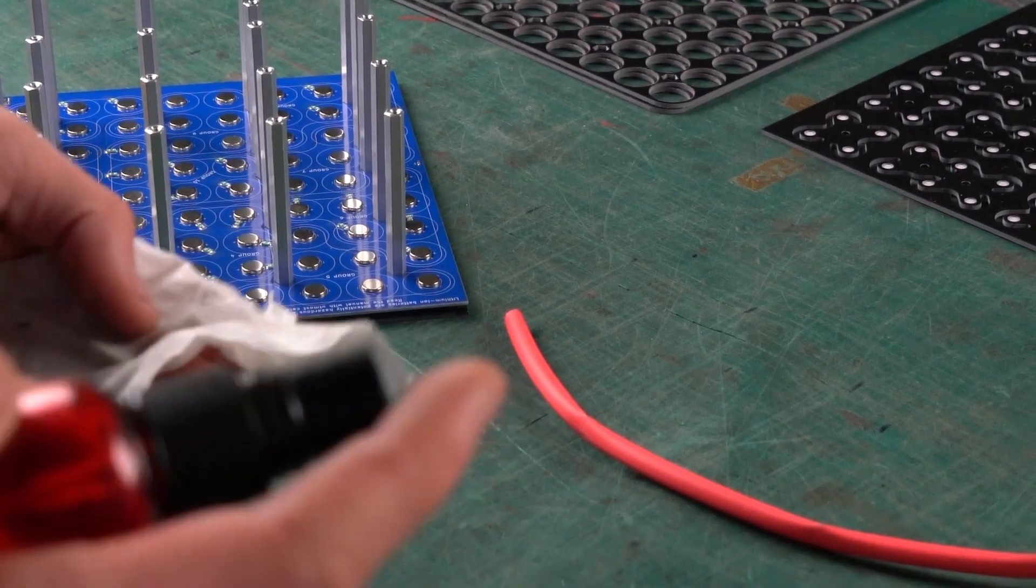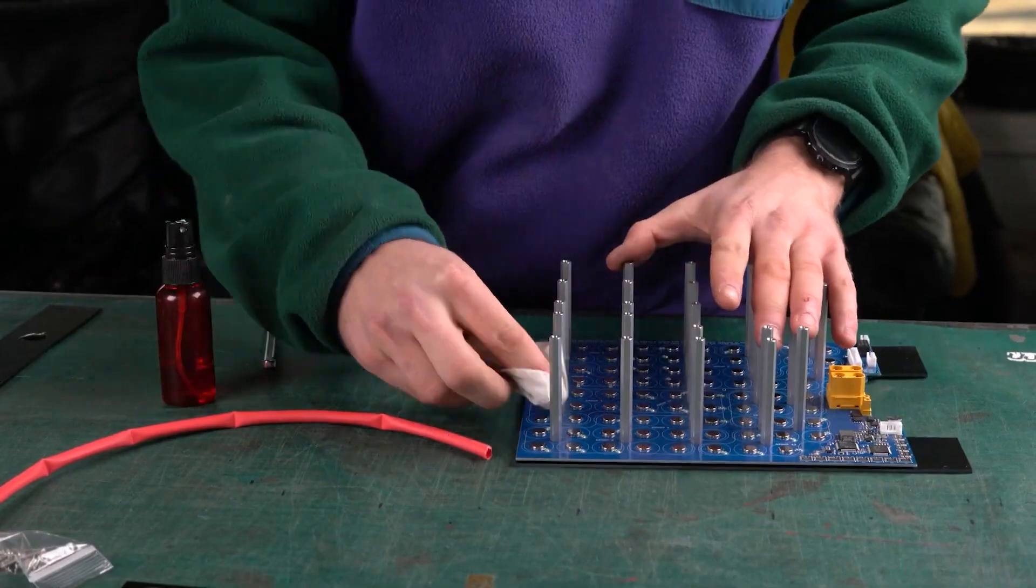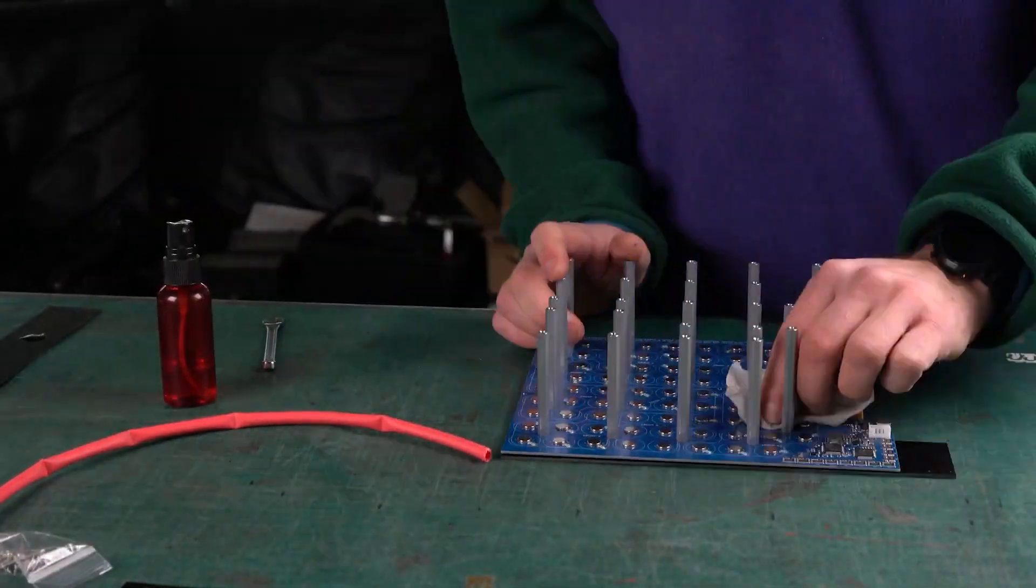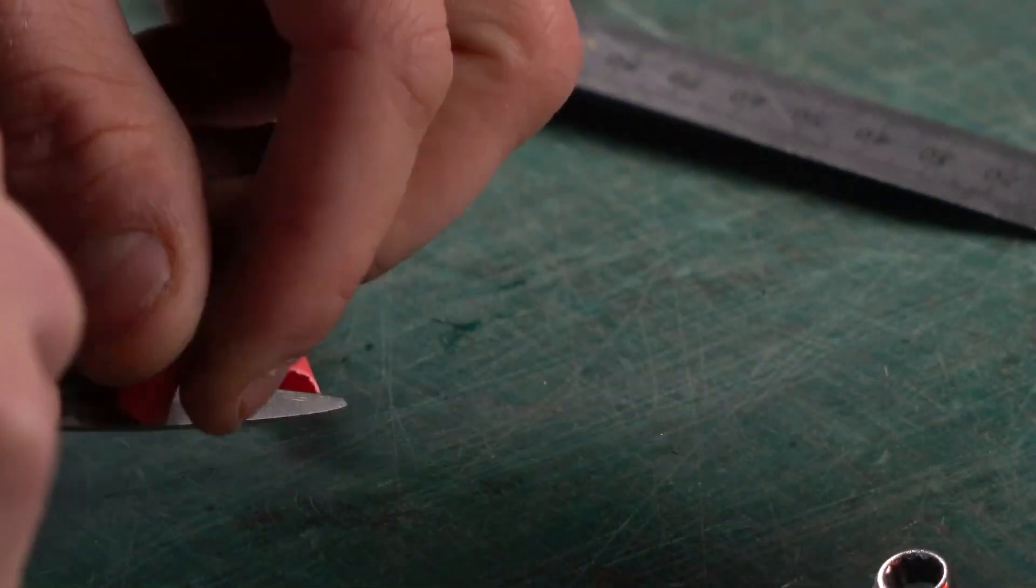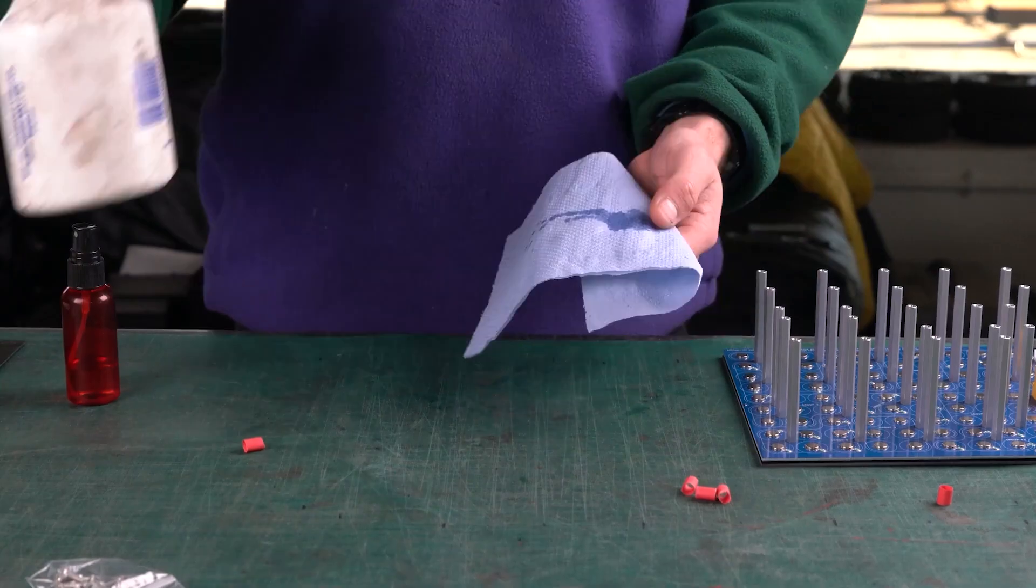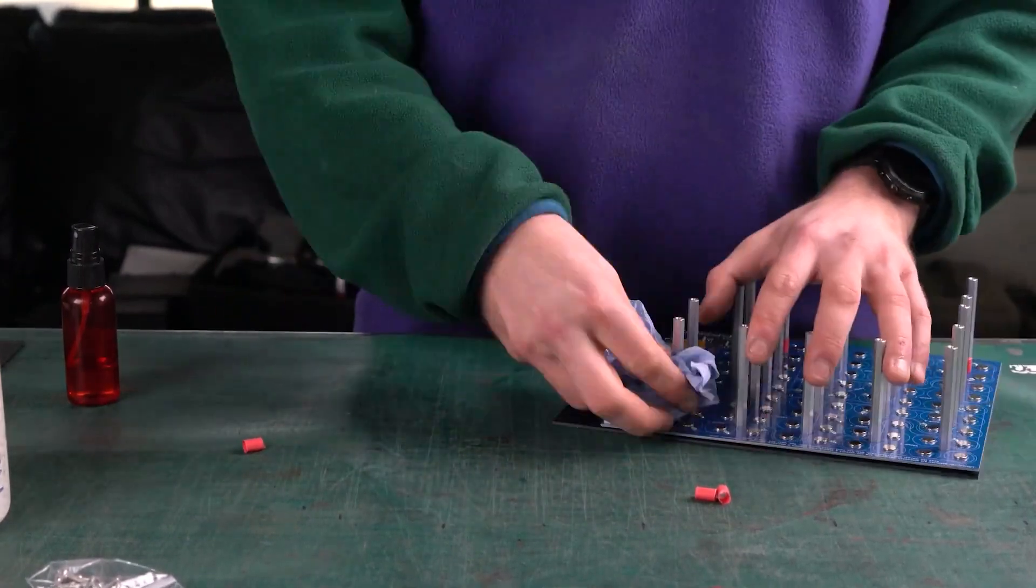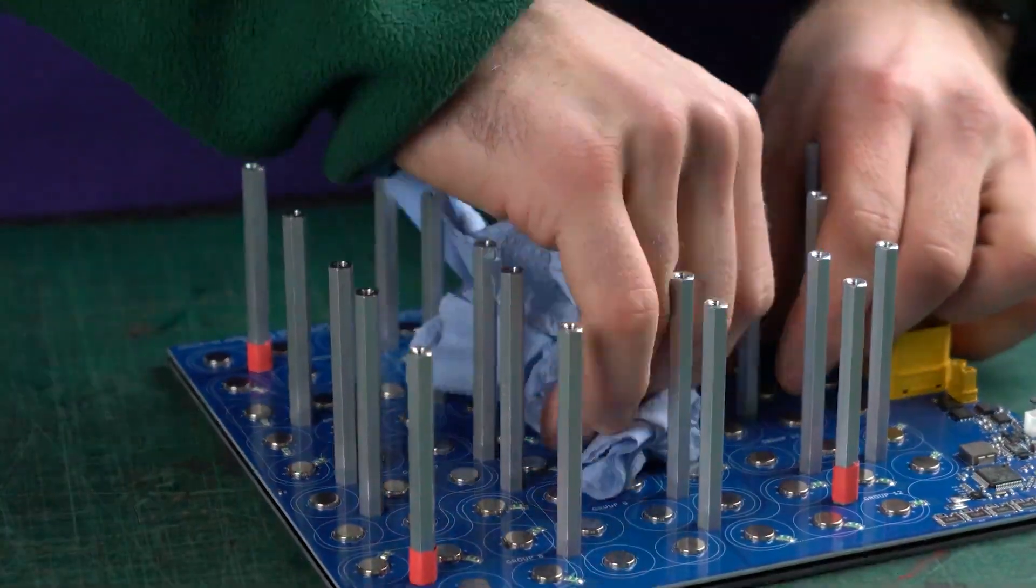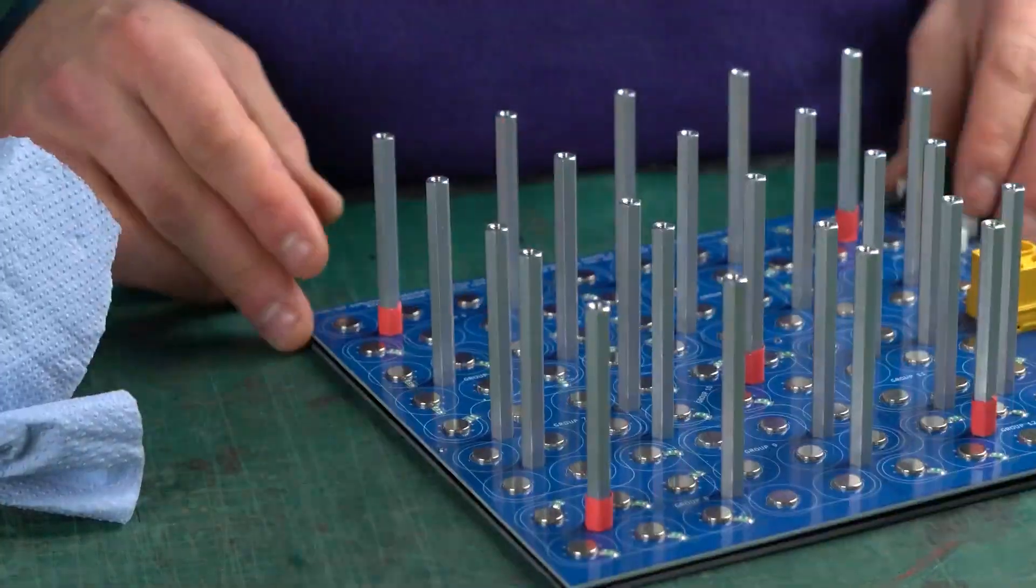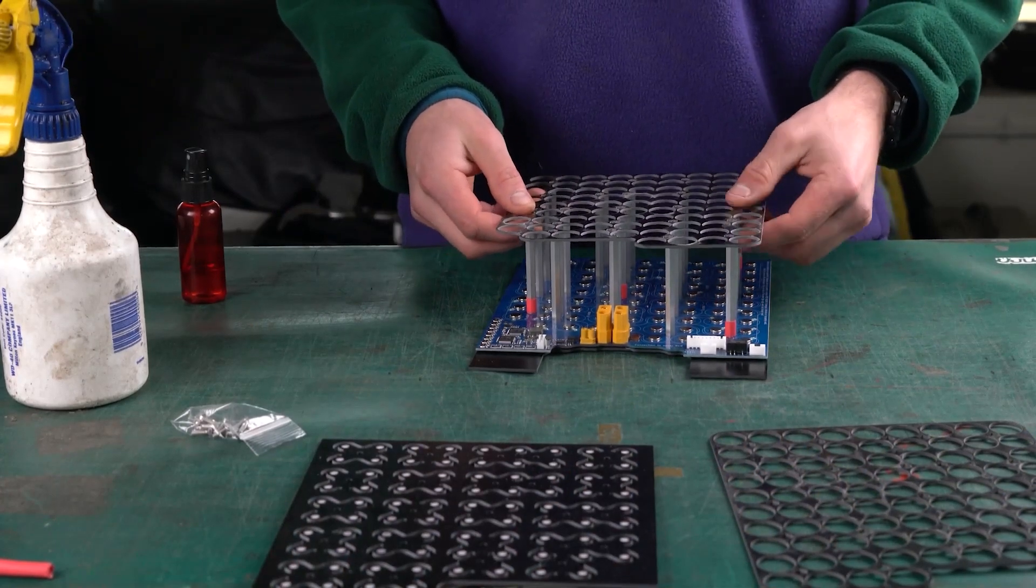The next step is to clean all the battery contacts with ethanol or isopropyl alcohol. Be careful not to touch them once cleaned. After this, place 10mm long shrink tube spacers onto each corner and one on a central hex spacer. Then, slide the lower cell spacer into position. This can take some perseverance.